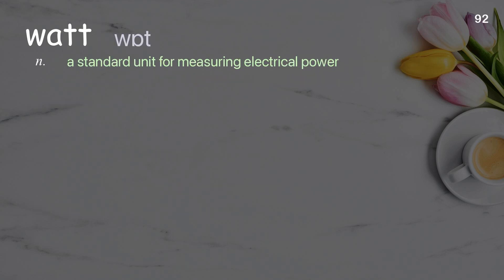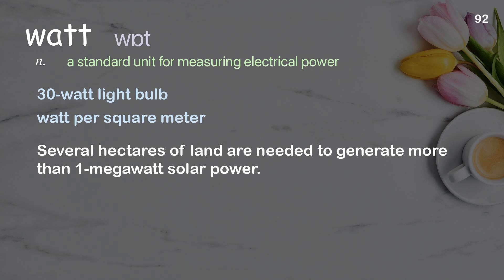Watt: a standard unit for measuring electrical power. Examples: 30-watt light bulb, watt per square meter. Several hectares of land are needed to generate more than one megawatt of solar power.